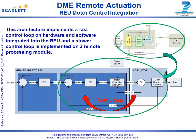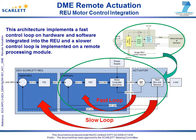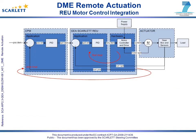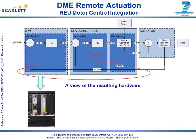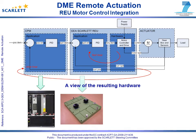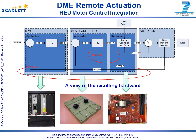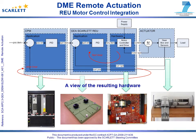The fast control function is implemented local to the actuator on the remote component to avoid network latency that would be introduced if this function were implemented on the core processing module. The slow loop control application is hosted on a core processing unit and provides position control. The resulting hardware components, shown from left to right, are a core processing module, the basic REU modified to include the motor control board, the prototype motor control board developed by GE Aviation Systems, and the motor control test rig developed by Naturen Limited.